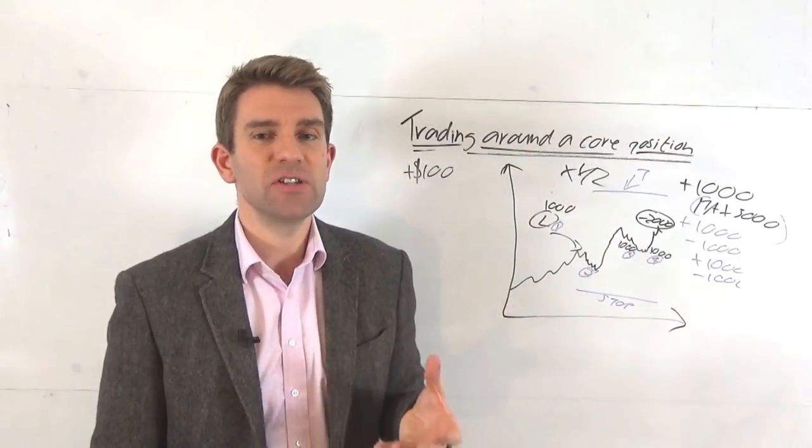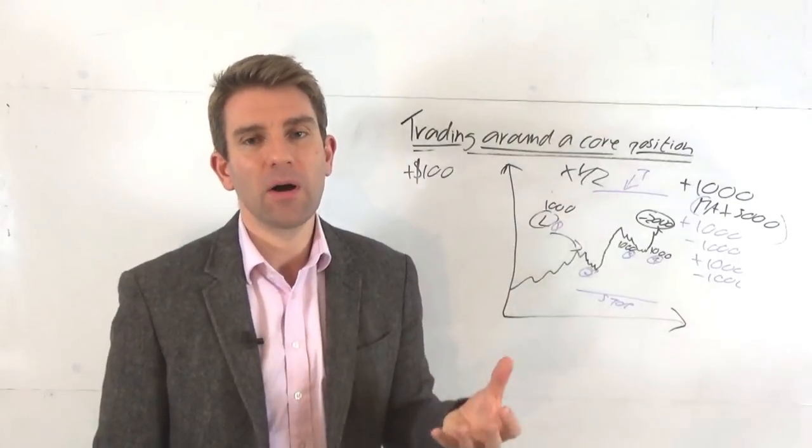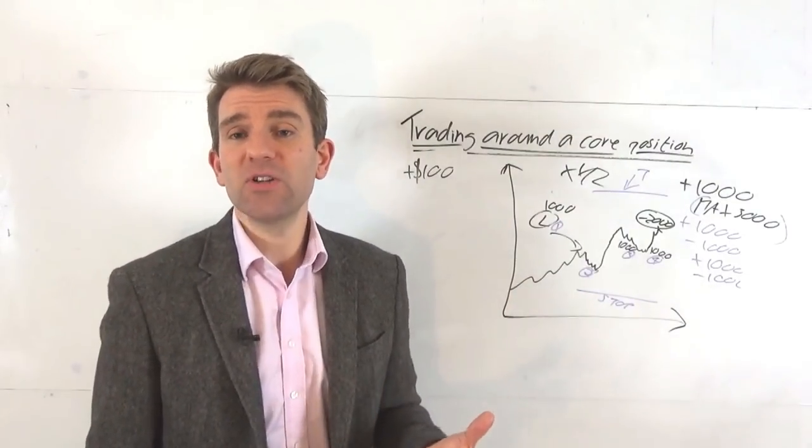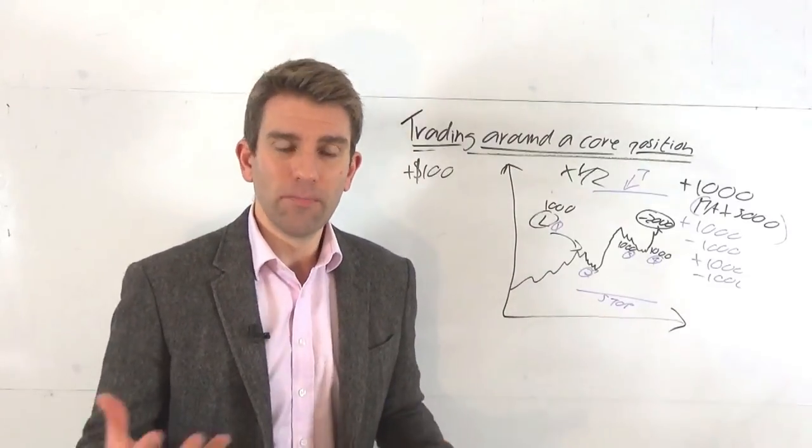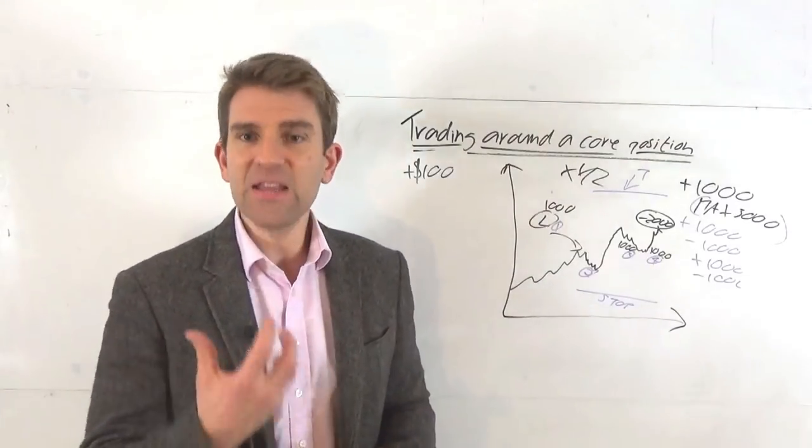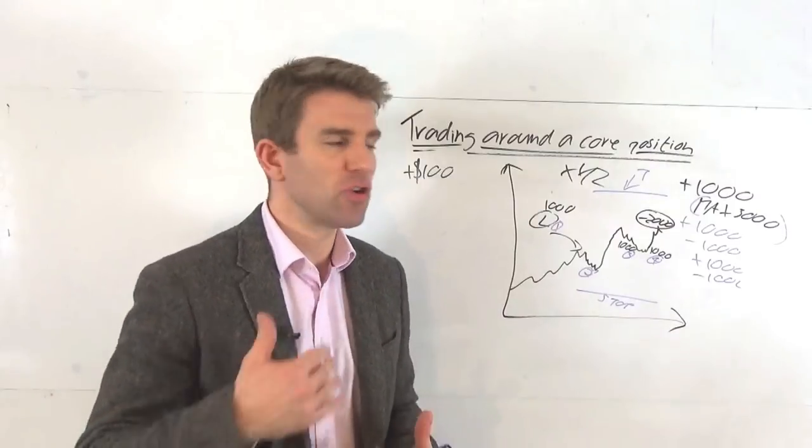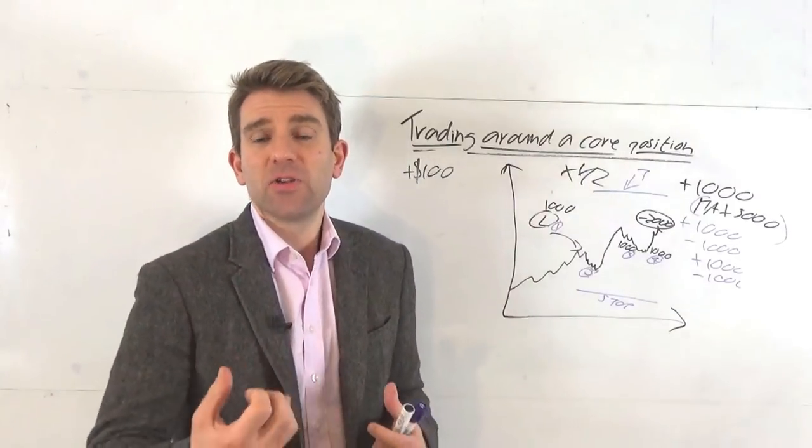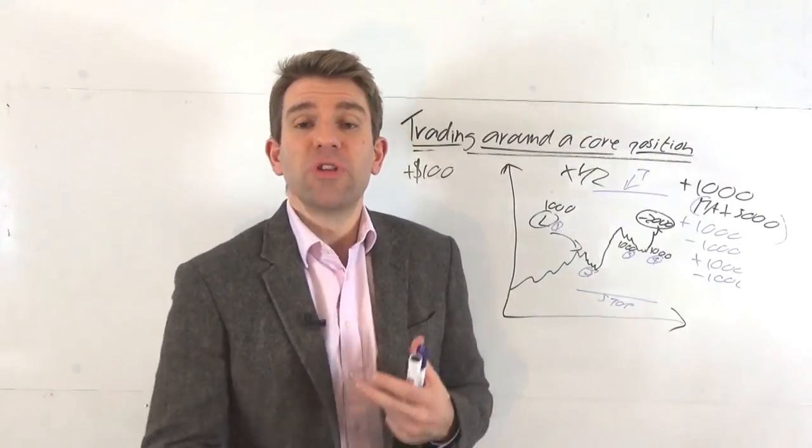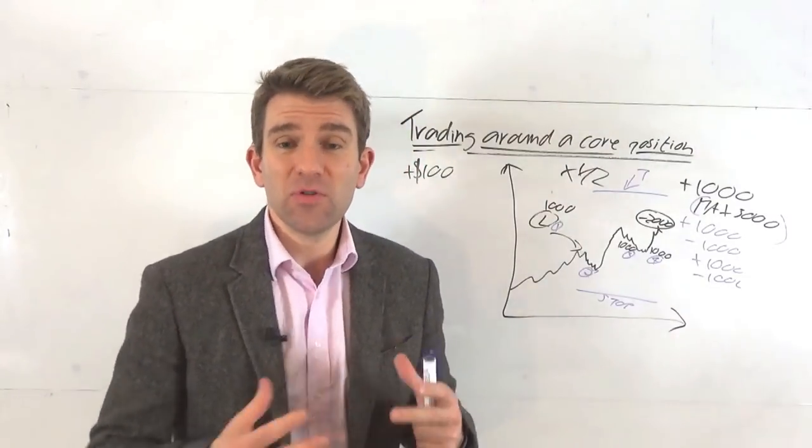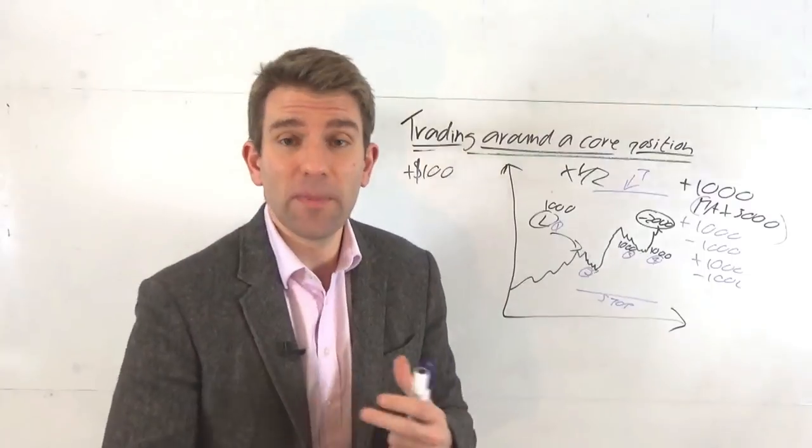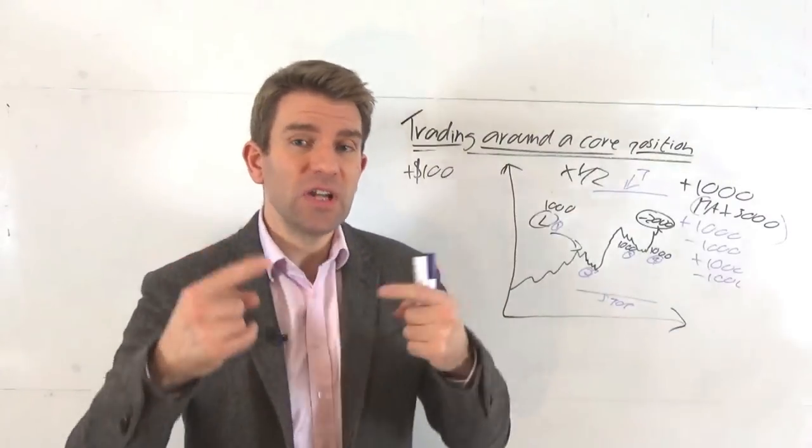Example when you might use this: you might use this if you were swing trading. Let's say you bought an index on a Monday afternoon and it's chugging on nicely on Tuesday. And let's say on Tuesday you day trade it a little bit, you buy a little bit more, you sell a little bit more. Wednesday you don't do anything. Thursday you then trade a little bit as well. You're trading around the core position, still in the direction of the trade.